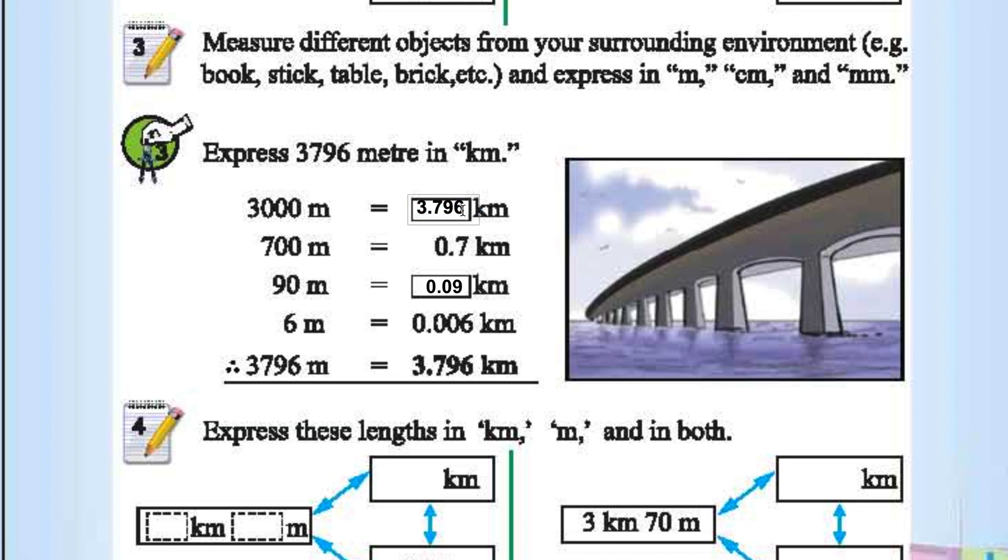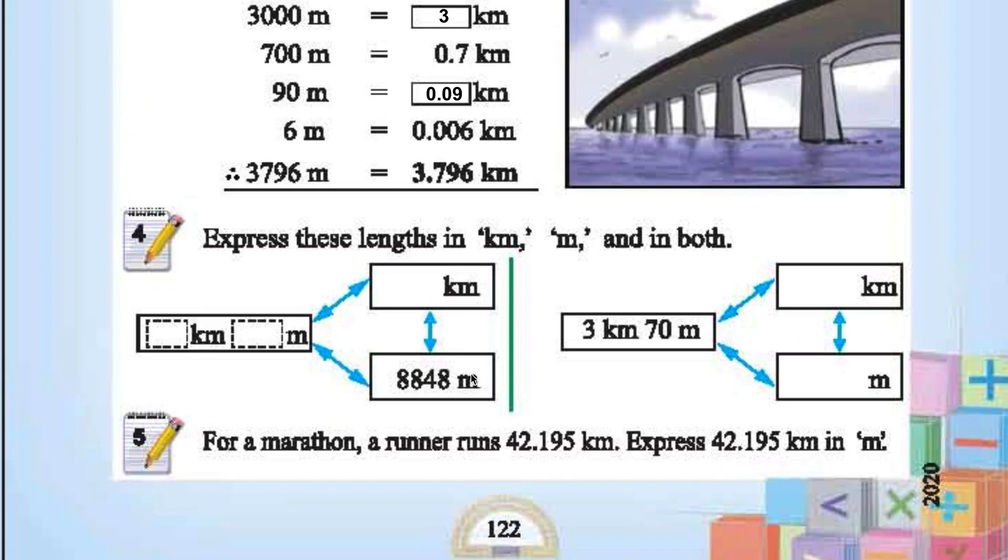Wait a minute. It is only 3000 meters. That is 3 kilometers. Add them up. You will get 3.796 kilometers. Express these lengths in kilometers and in both.